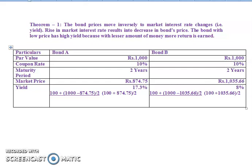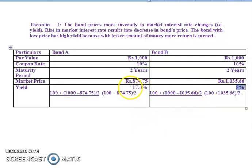We have to calculate yield. As you already know how to calculate yield to maturity from previous problems, putting all these values in the formula, we arrive at 17.13% for Bond A and 8% for Bond B. By analyzing these two, Bond A yield is greater than Bond B yield, so Bond A is preferred. This is what theorem 1 demonstrates.